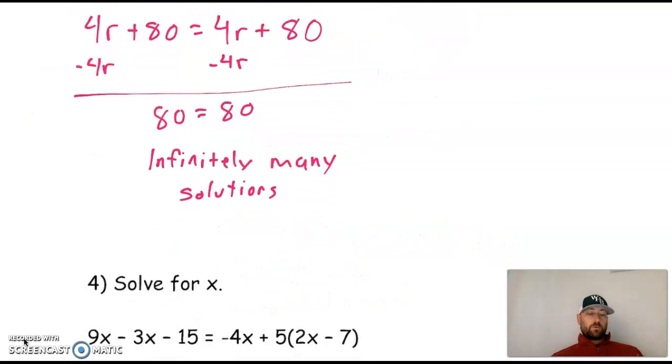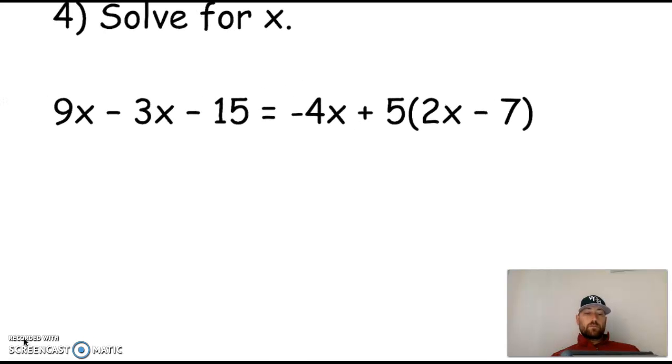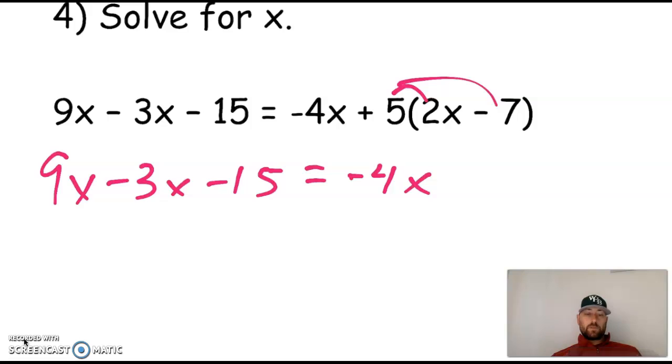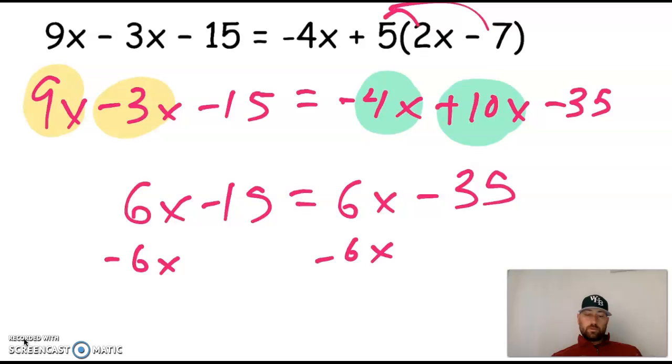Okay. Here we go. Number four, you solve for it. Simplify it. Does it have no solutions or infinitely many? Okay. Here we go. So I'm going to distribute first, 9x minus 3x minus 15, negative 4x plus 10x minus 35. And then I'm going to combine like terms, those two on that side, those two on this side. 6x minus 15 is equal to 6x minus 35. I can see it coming. Hopefully you are starting to be able to see it coming.